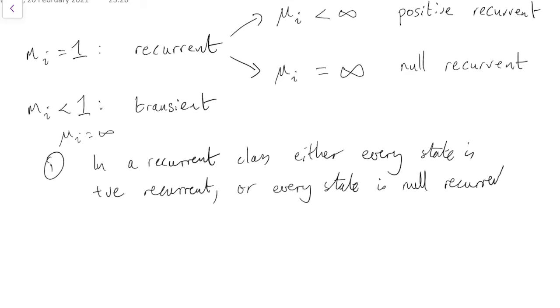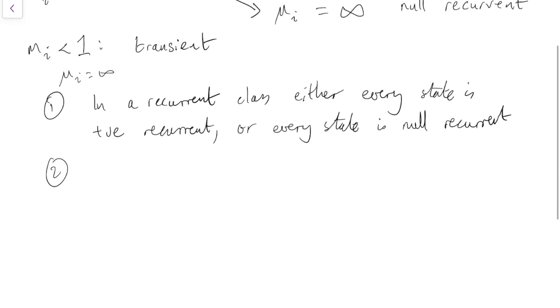Which is what we had before. Also, you'll remember before we talked about the case of finite closed classes. It turns out that finite closed classes are the positive recurrent type, because we said that finite closed classes are always recurrent. But in fact, they're the positive recurrent type.